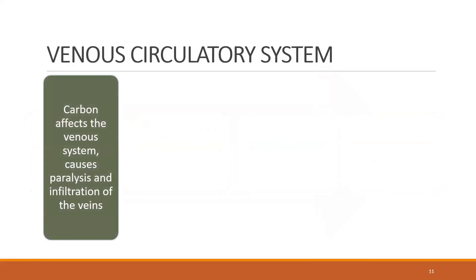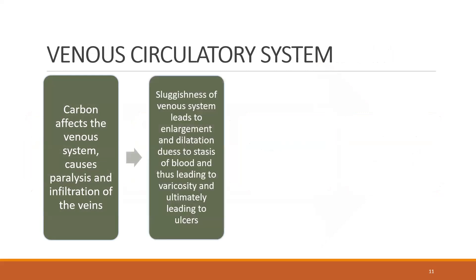Coming to the venous circulatory system: carbon affects the venous system, causing paralysis and infiltration of the veins. That is why there is stagnation and sluggishness of the veins. Sluggishness of the venous system leads to enlargement and dilatation due to stasis of blood, thus leading to varicosity and ultimately to ulcers.